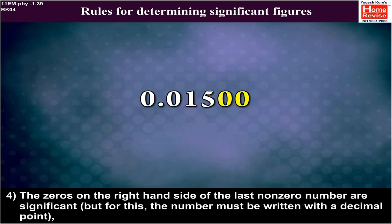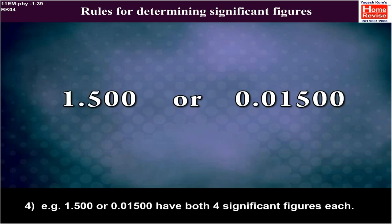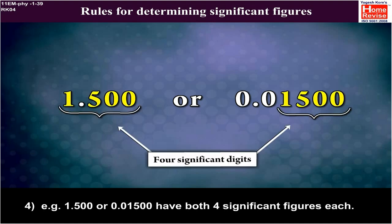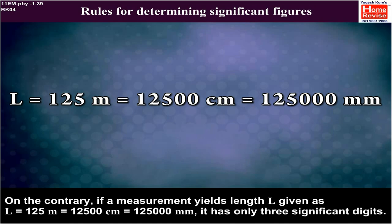4. The zeros on the right hand side of the last non-zero number are significant. But for this, the number must be written with a decimal point. Example, 1.500 or 0.01500 have both four significant figures each.